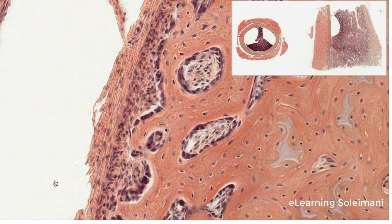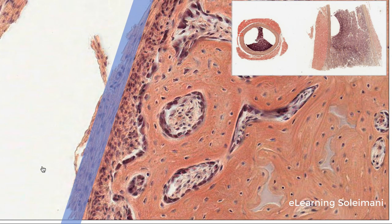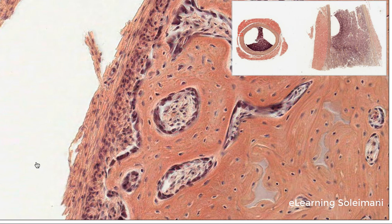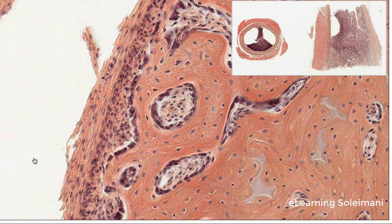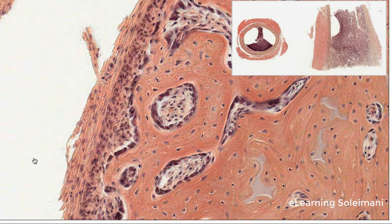The outer area of the periostium is composed of fibrous tissue, which provides support and protection to the bones. Within the inner area of the periostium there are osteoprogenitor cells that can differentiate into osteoblasts.